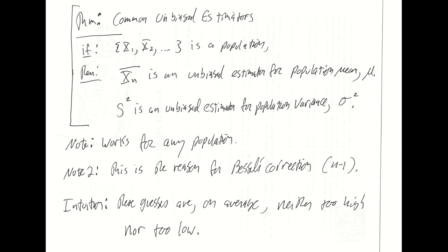There are no restrictions placed on the population here. Populations are always countably infinite collections of IID random variables — that's built into the definition of a population. But if you have that minimum amount of context established, nothing else is required. They don't have to be normal random variables; they don't have to have finite variance; there are no further restrictions. It works for any population. Sample mean is always an unbiased estimator of population mean, and sample variance is always an unbiased estimator for population variance.